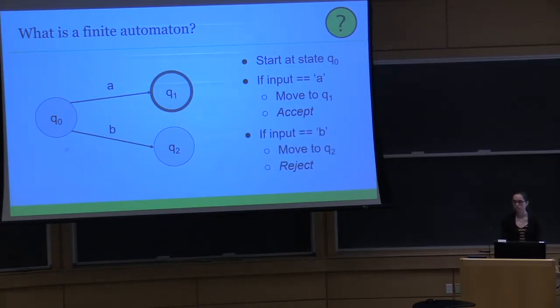But on a b, we would move from q0 to q2, which is not an accept state, so the string would be rejected.